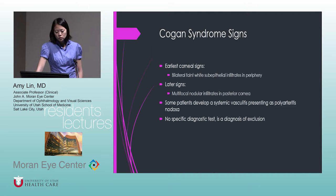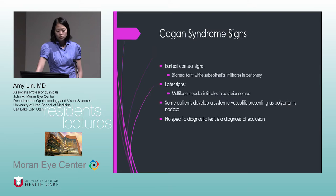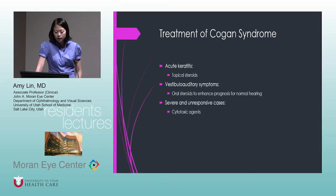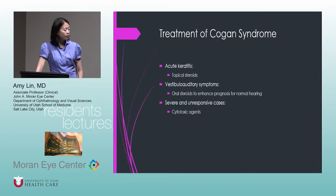There is no specific diagnostic test for Cogan syndrome — it's a diagnosis of exclusion. Treatment is with steroids for vestibular-auditory symptoms; oral steroids can enhance prognosis for normal hearing. For very severe cases, systemic immunosuppression may be required.